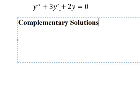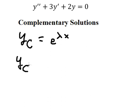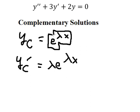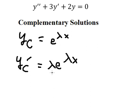I will put yc equals to e to the power of lambda x. Then we need to do the first derivative of yc, which gives us lambda times e to the power of lambda x, because the derivative of e to the power of lambda x keeps the same e to the power of lambda x, and the derivative of lambda x gives us lambda.